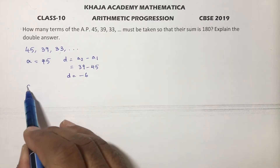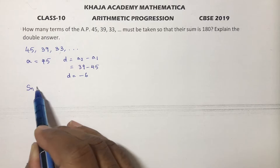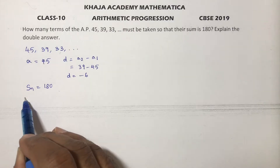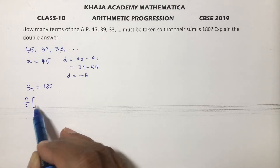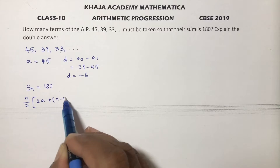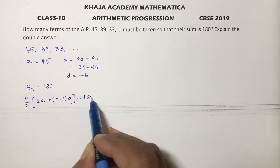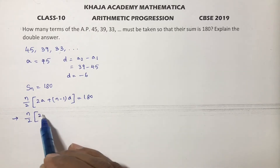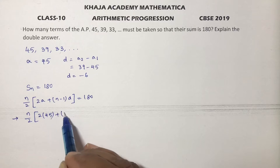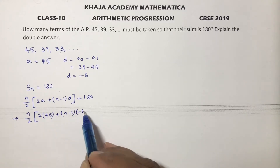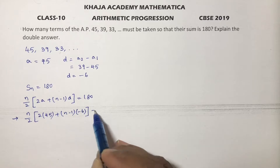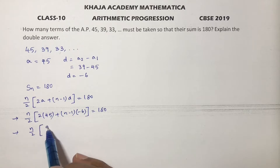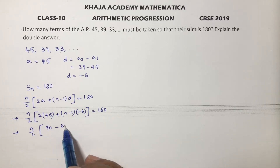The sum is 180, and we need to find n — how many terms. The Sn formula is n by 2 into 2a plus (n minus 1) into d equals 180. Substituting: n by 2 into 2 times 45 plus (n minus 1) into minus 6 equals 180.